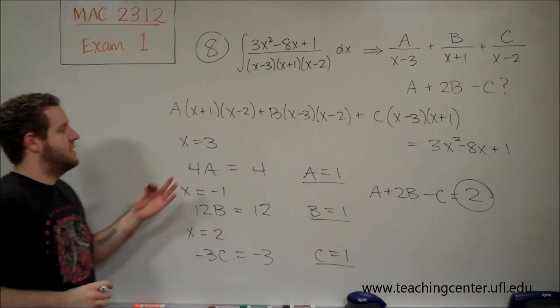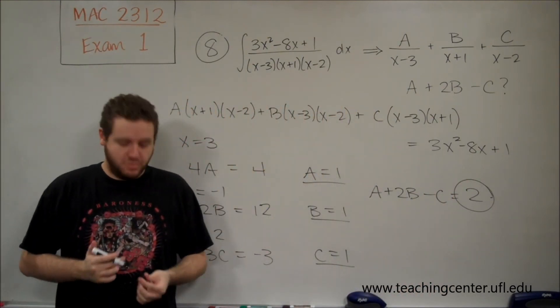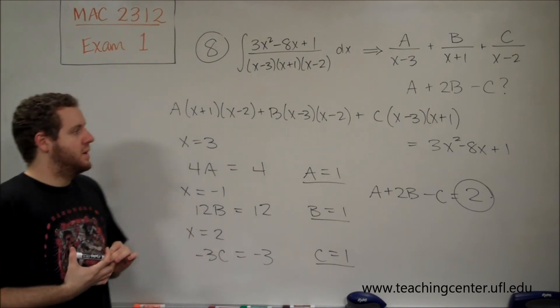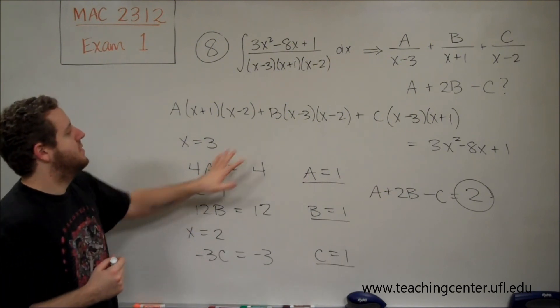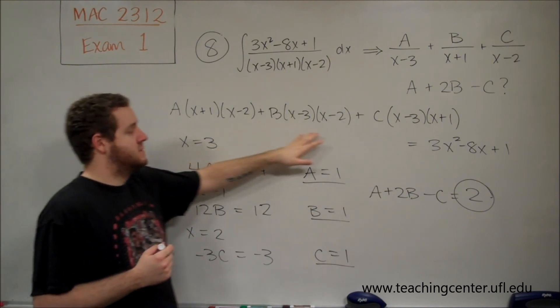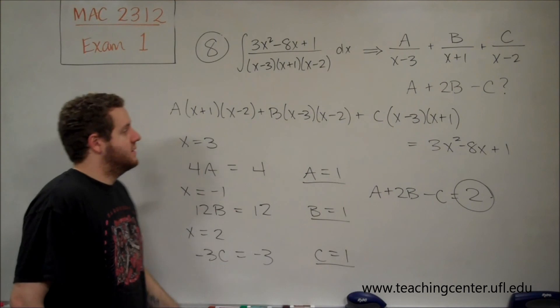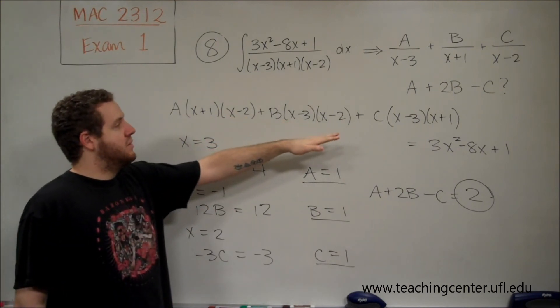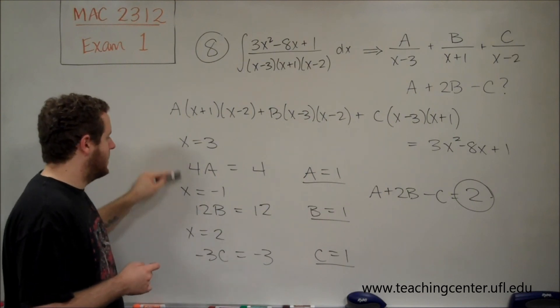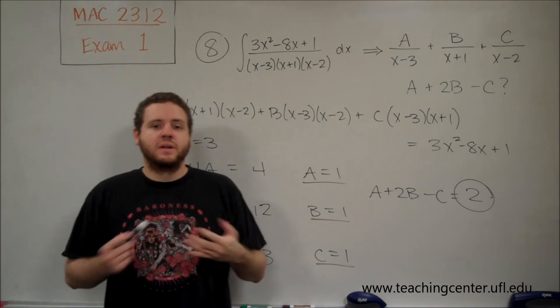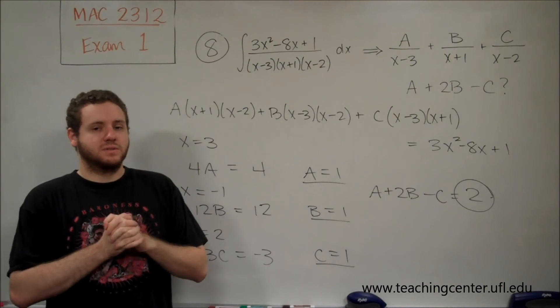So, in this type of problem, the partial fractions was already set up for you. But, in this case, and I mean, you should always be looking out for this. If you have multiple factors, such that each letter that you're trying to solve for has different factors, usually plugging in numbers that turn the other ones into 0 is going to be the easiest way to do those partial fractions questions.